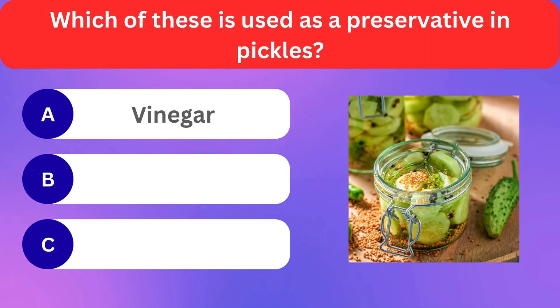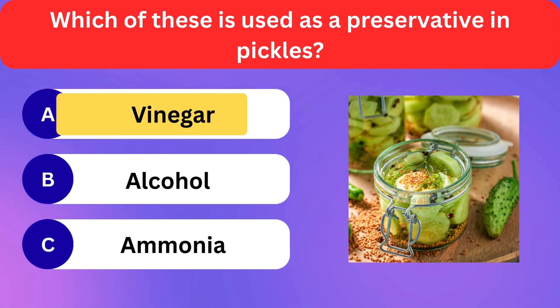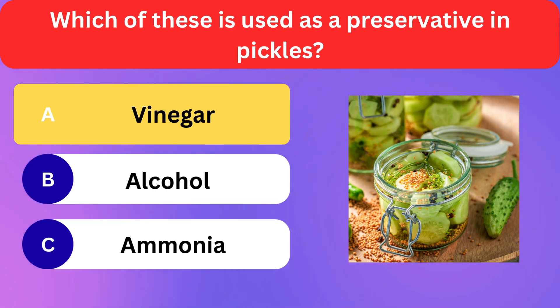Which of these is used as a preservative in pickles? Vinegar, Alcohol, Ammonia. Correct answer is vinegar.